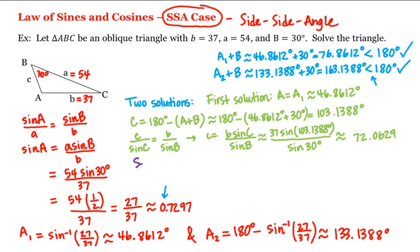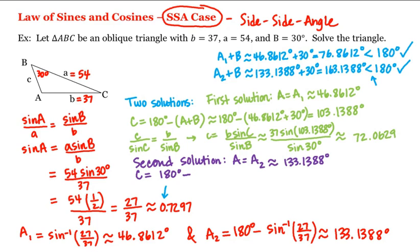And what about our second solution? When A is equal to A2, or approximately 133.1388 degrees. Again, we can find C by using the fact that the angles in the triangle add up to 180 degrees — that is, C equals 180 degrees minus (A plus B), which is 180 minus 133.1388 minus 30 degrees, which equals 16.8612 degrees.